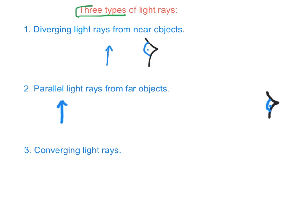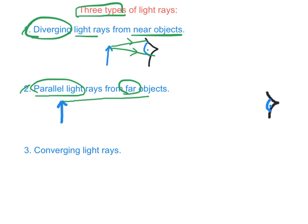There are three types of light rays. First, diverging light rays from a near object. Second, we have parallel light rays from a far object. Thirdly, we have converging light rays.